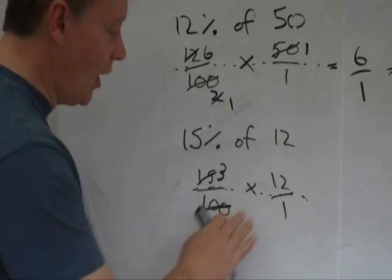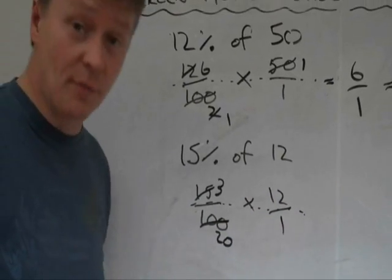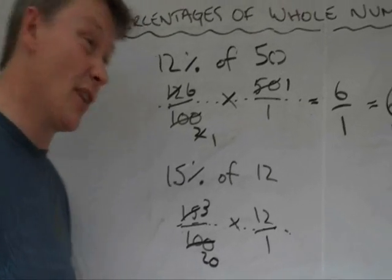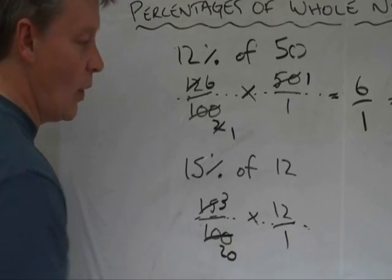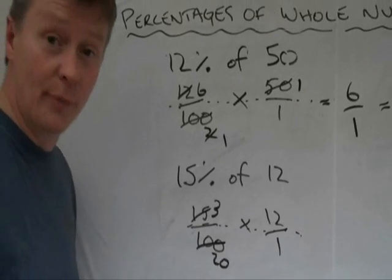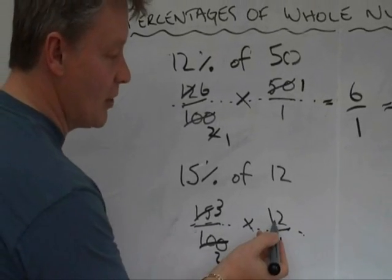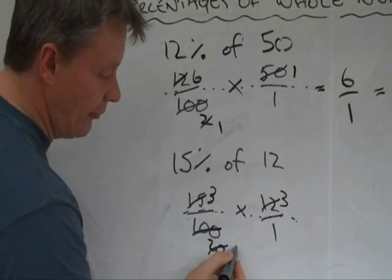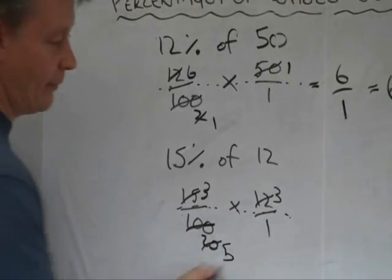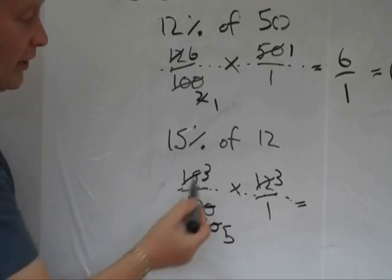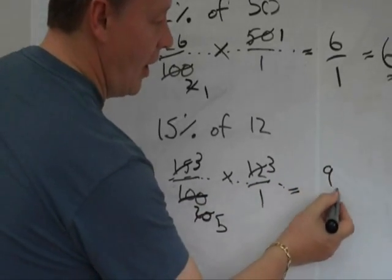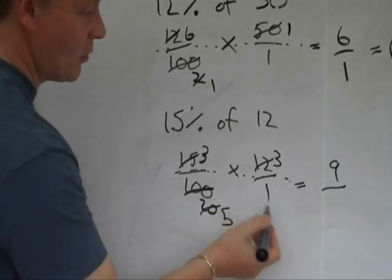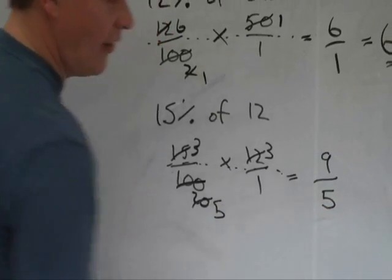And also, I've got 12 and 20 there. And just because I want to make the numbers smaller because they're a bit easier to deal with, 12 and 20 can both be divided by 4. So, 12 divided by 4 is 3, 20 divided by 4 is 5. So, the question now I've got is 3 times 3, which is 9, 5 times 1, which is 5.